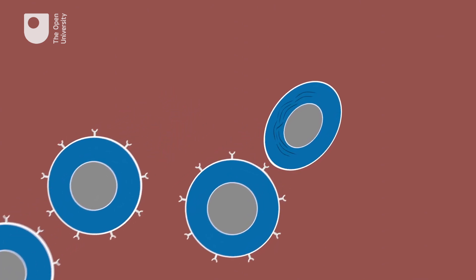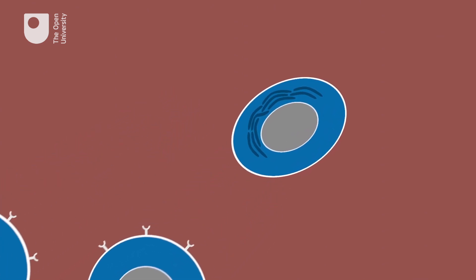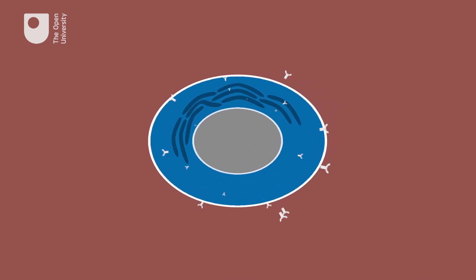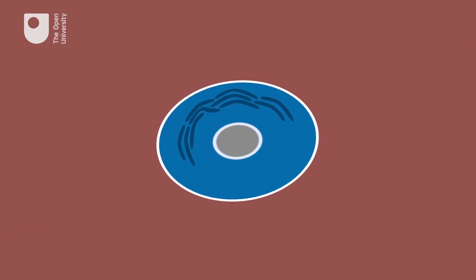Some of these new cells become plasma cells. This is the name given to the cells that function as antibody factories, producing antibodies that recognise the pathogen and flag it for destruction by other cells of the immune system. However, these plasma cells only live for a few days.